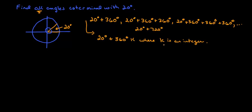This also includes, since k is an integer, it includes the negative values as well. For example, if k is negative 2, then we're subtracting 2 revolutions. If k is negative 5, then we're subtracting 5 revolutions, so on and so forth.